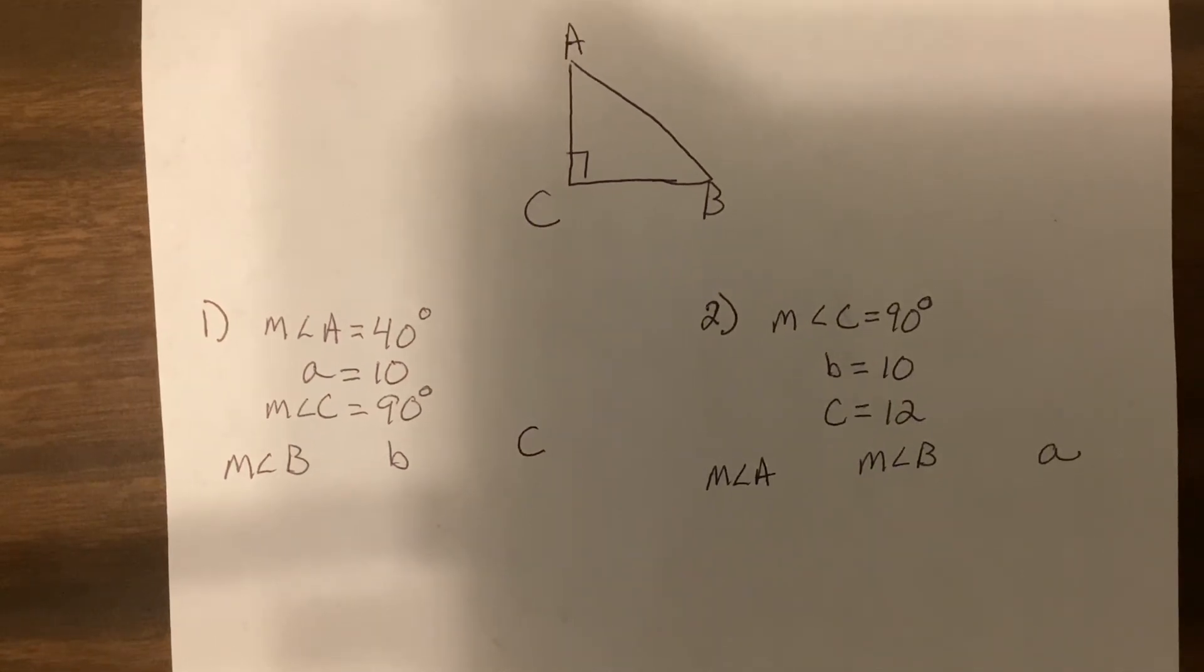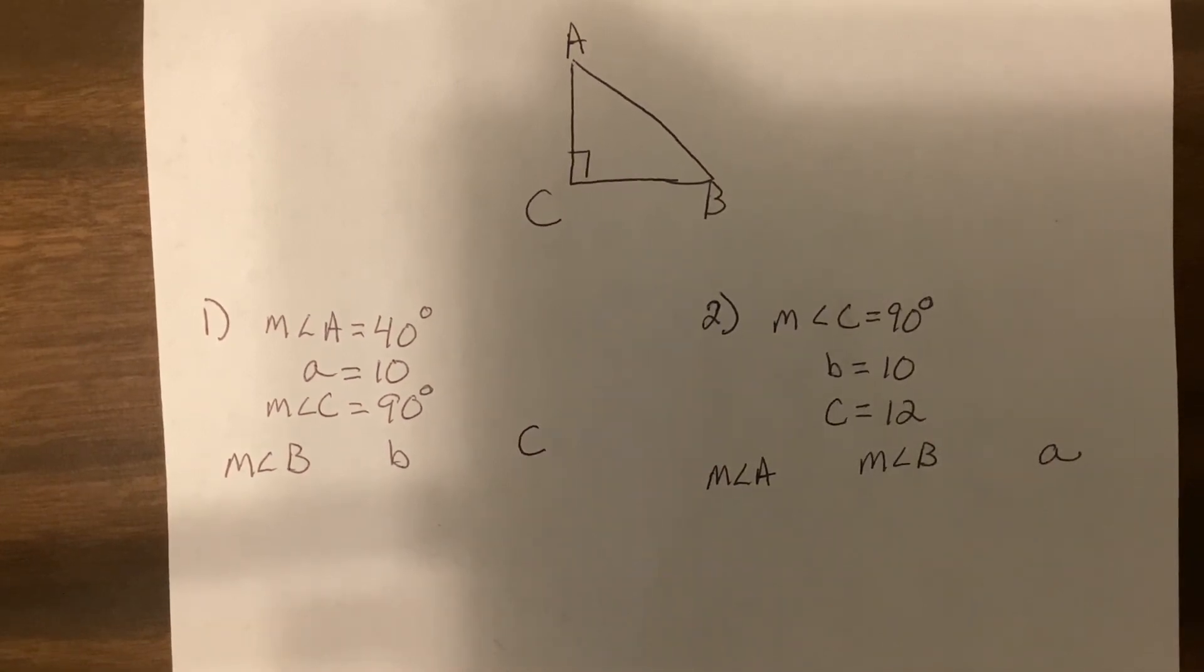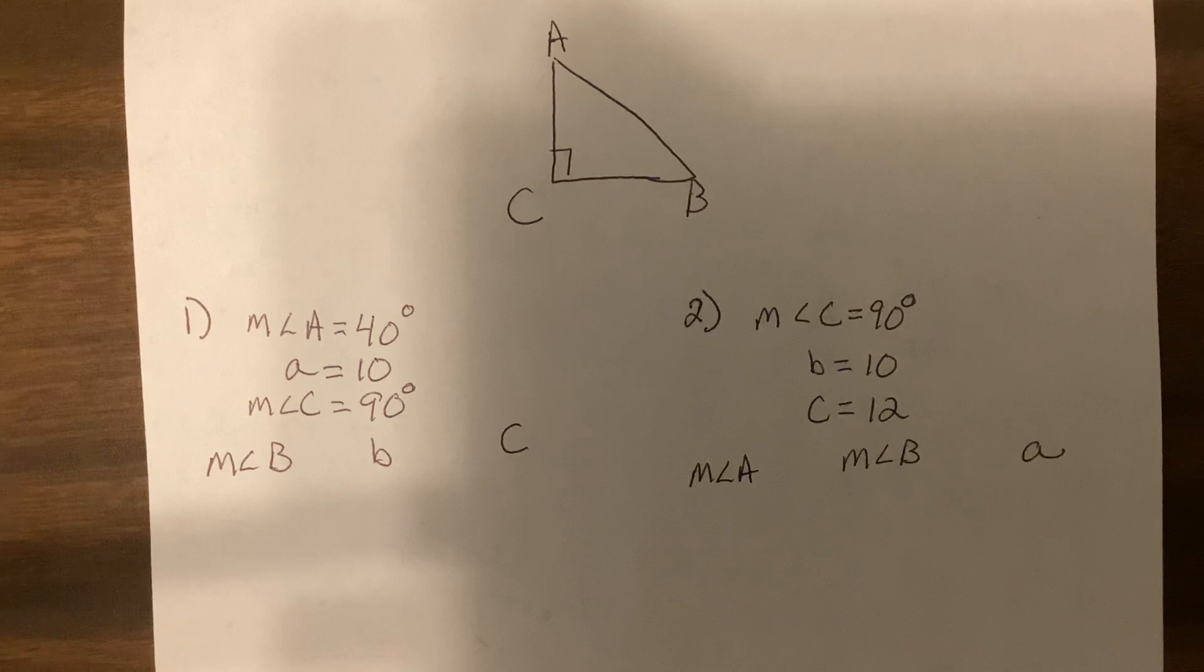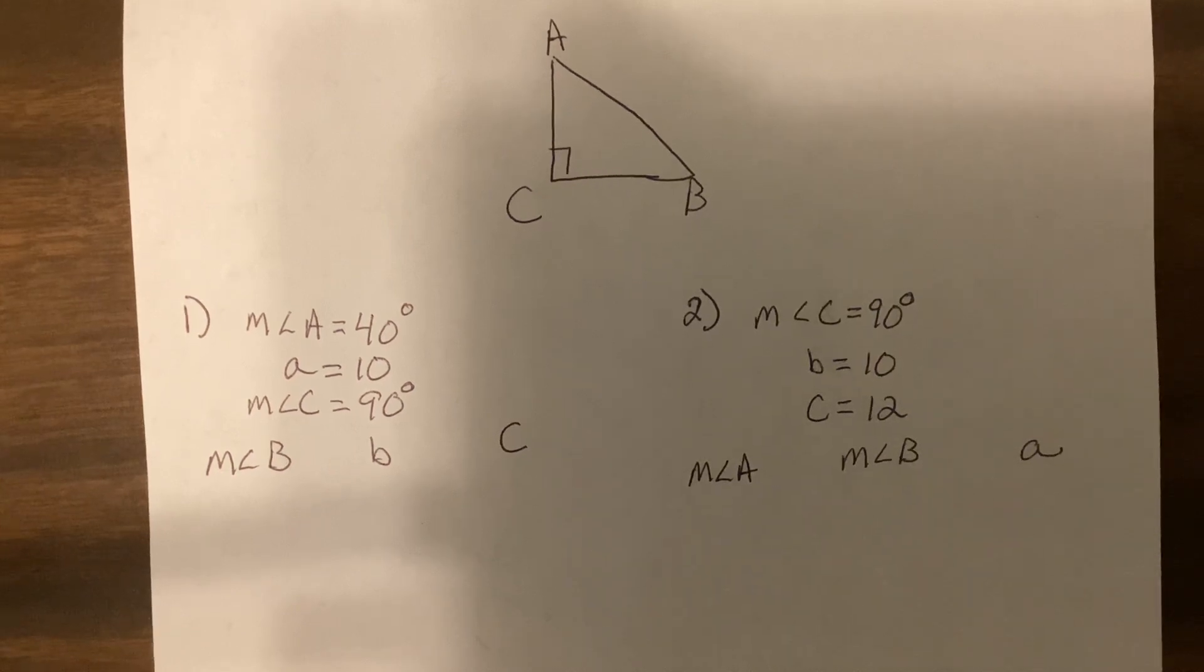Well, we are continuing on. I think this is video eight if I remember correctly. This is page four. You may use a calculator on page four. This is the start of page four, I should say. Right triangle trigonometry. You'll spend time next year on this also in geometry or honors geometry.